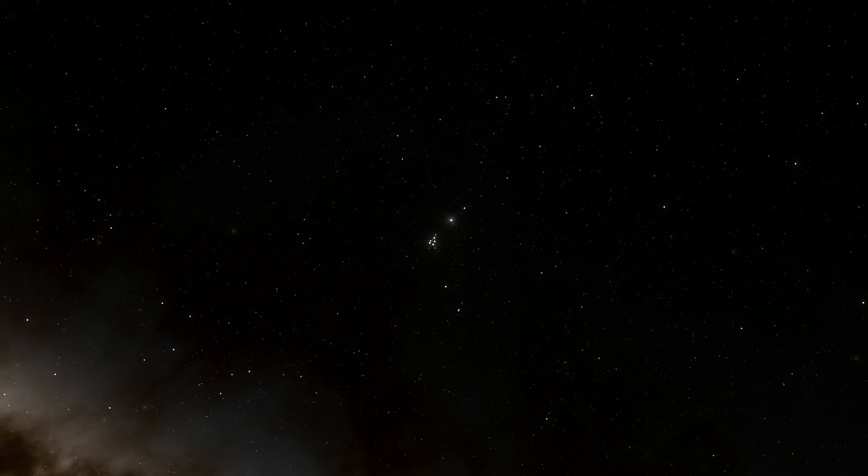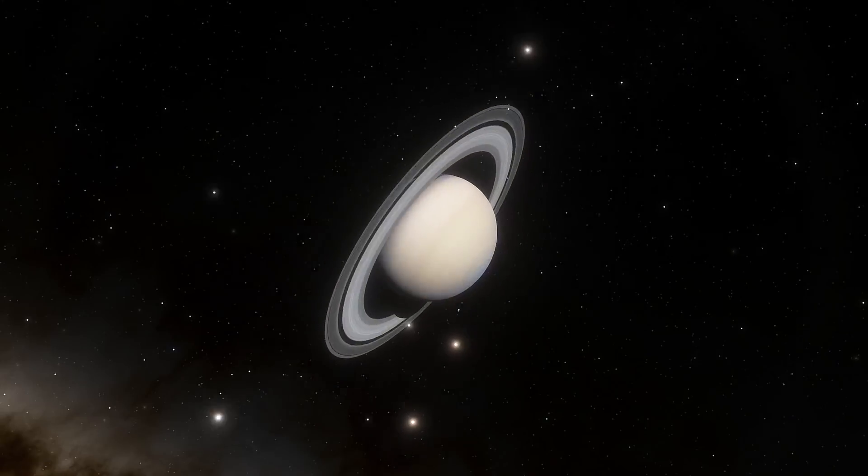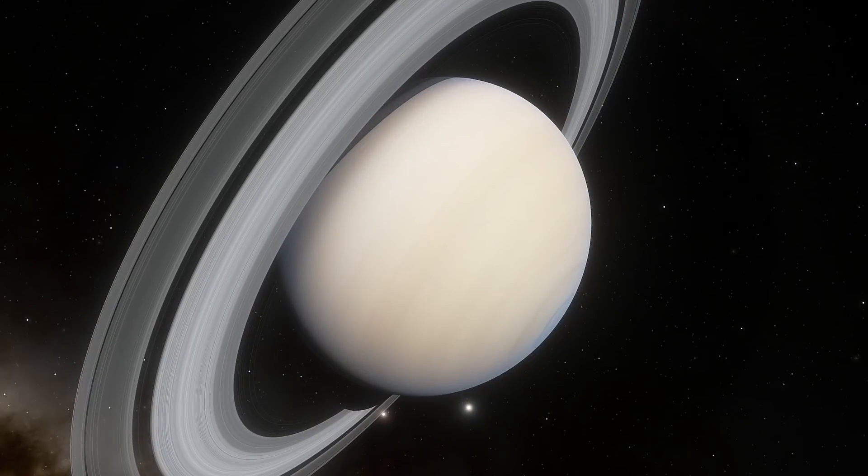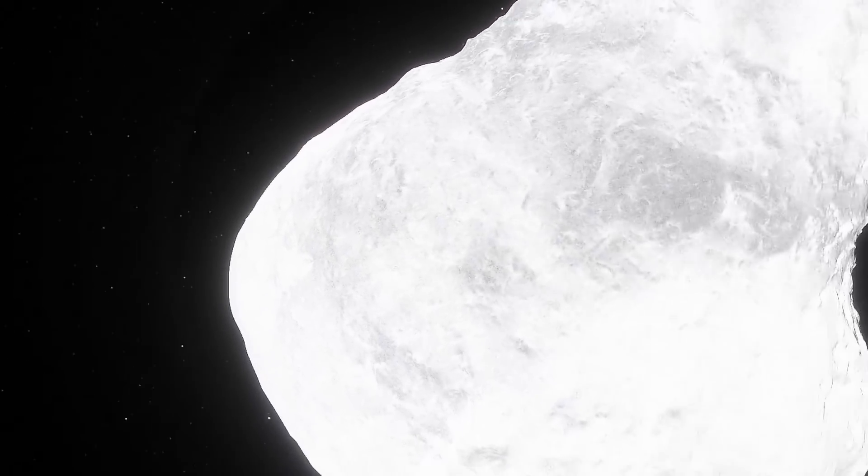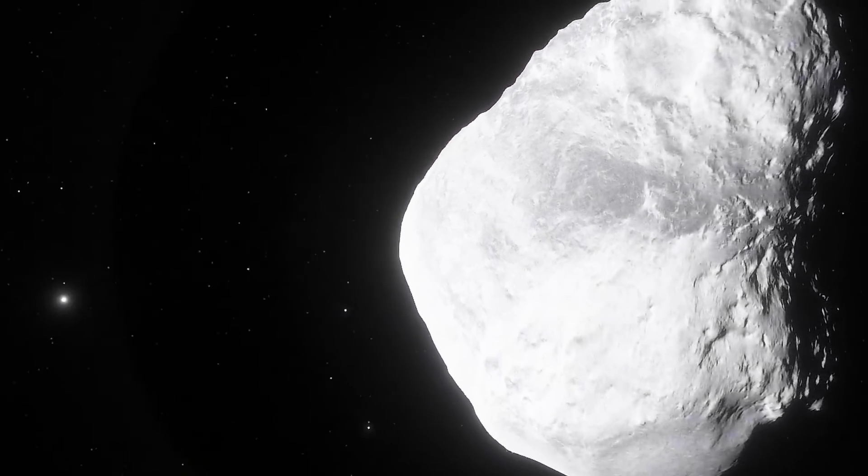The Electric Universe would build on this concept but would place the origin of Venus in Saturn, not in Jupiter. It therefore stands to reason that these asteroids hold the clues to understanding what might have happened to our solar system in the past.